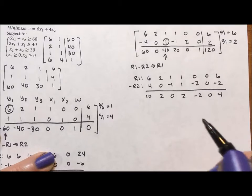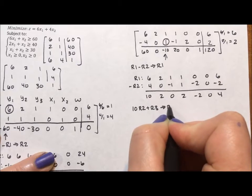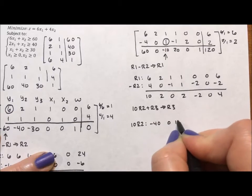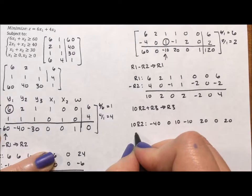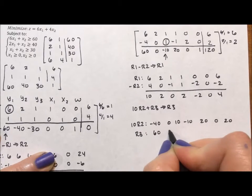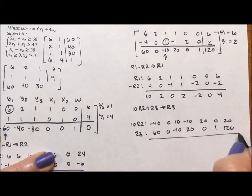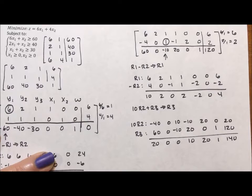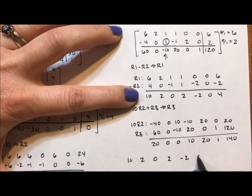Okay. Then to get rid of that 10, I'm going to do 10 times row 2 plus row 3 and put that into row 3. 10 times row 2 is negative 40, 0, 10, negative 10, 20, 0, 20. And row 3 is 60, 0, negative 10, 20, 0, 1, 120. And when I add down, I get 20, 0, 0, 10, 20, 1, 140. So my first row became 10, 2, 0, 2, negative 2, 0, 4. I probably should divide it by 2.